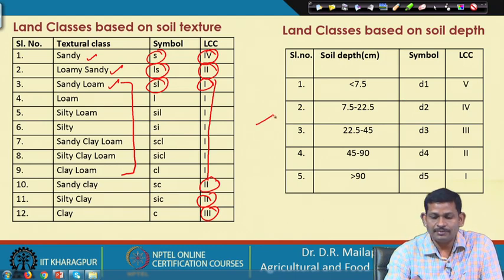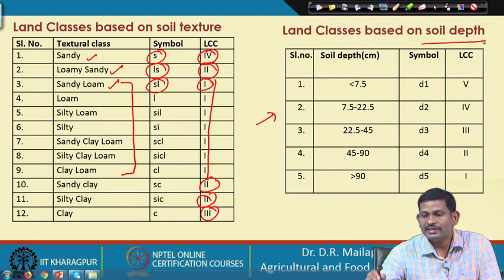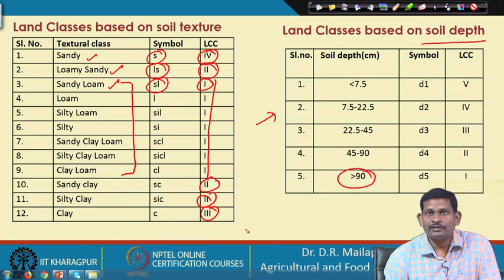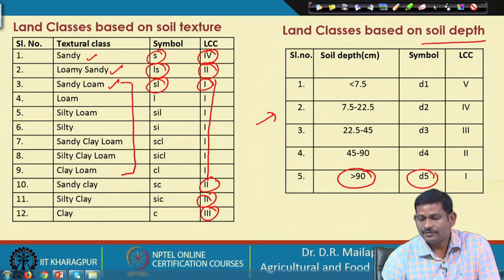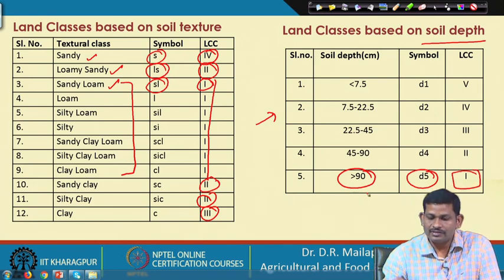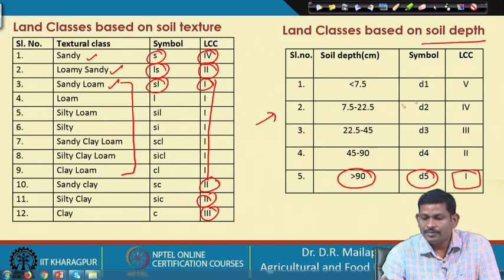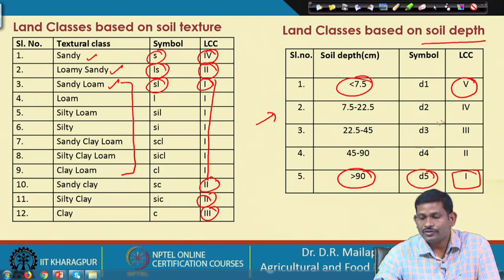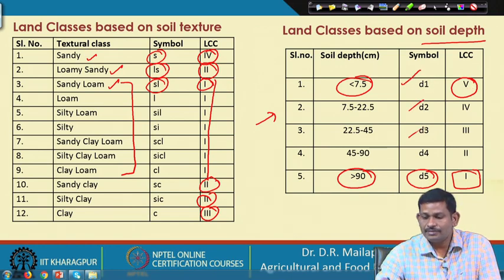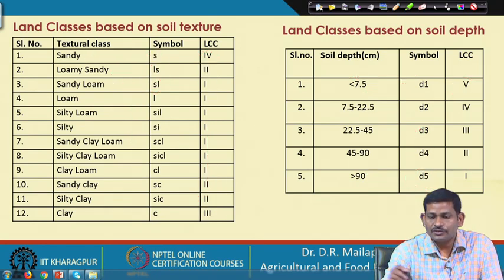Land classes can also be based on soil depth. Deep soil depth (D5, greater than 90 cm) supports class 1, while class 5 supports soils with less than 7.5 cm depth. Different symbols are used to represent the different soil depths in the classification system.